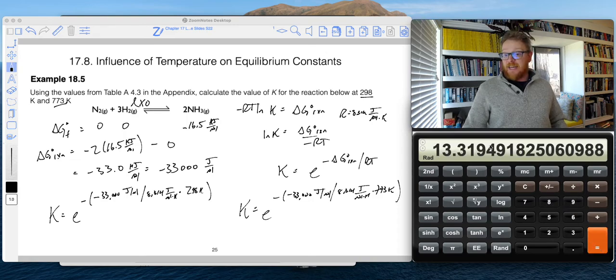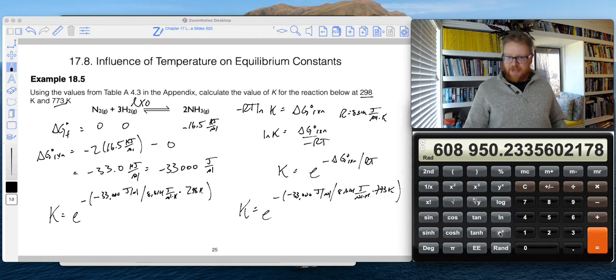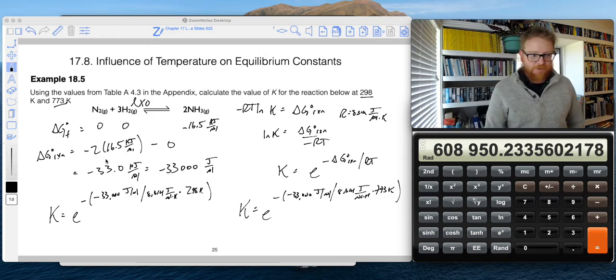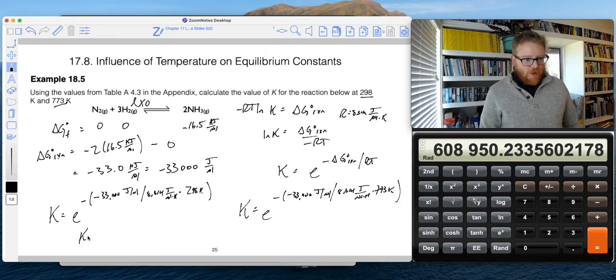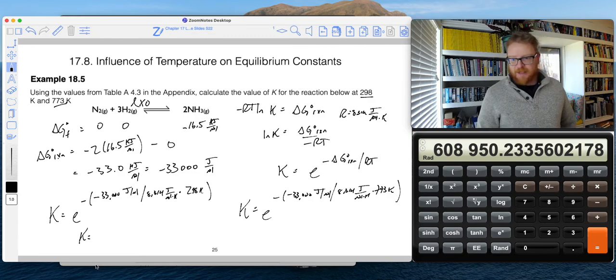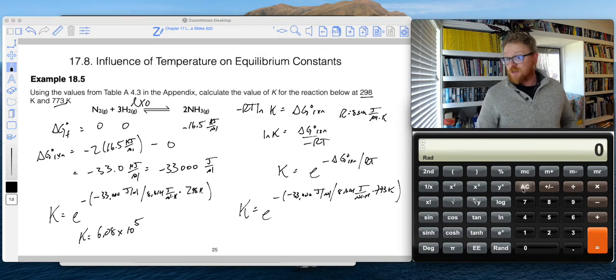So divided by 298 equals, and then now I take the E of this number, and on the scientific calculator, I can just push E to the X, and I get a really big number for this. So that equilibrium constant for this, I get 6.08 times 10 to the 5th power.